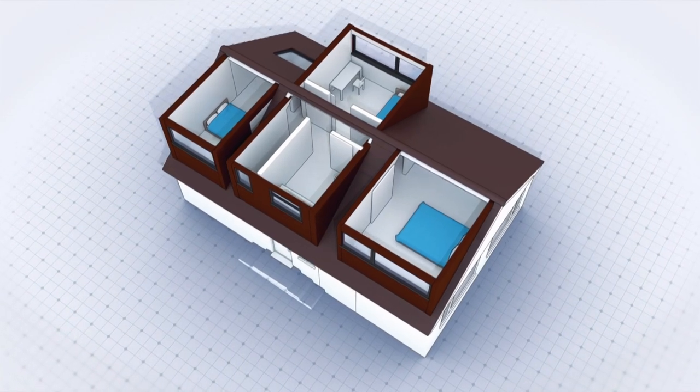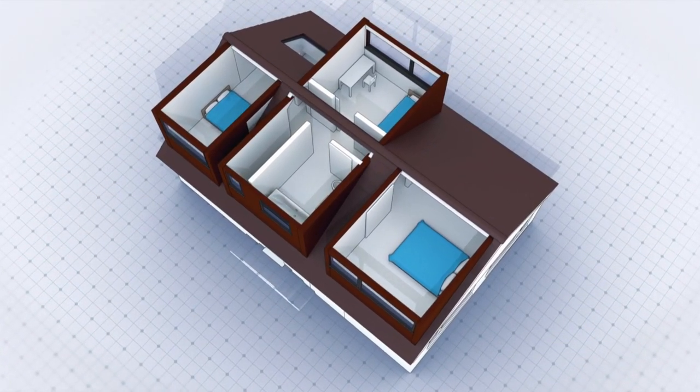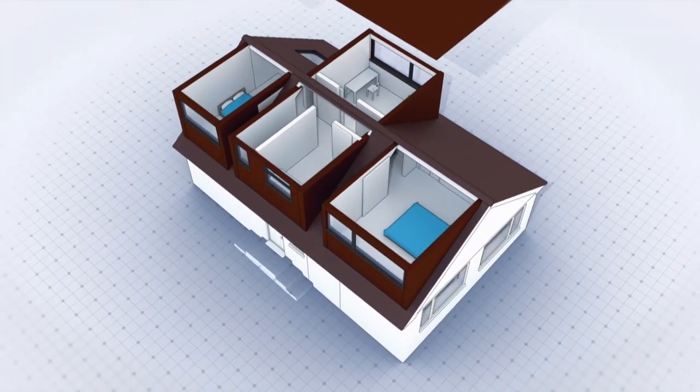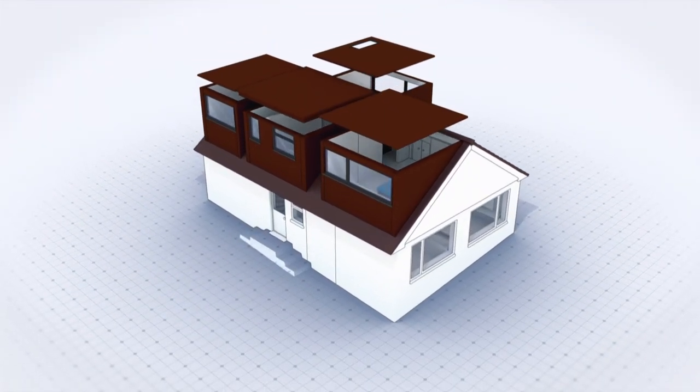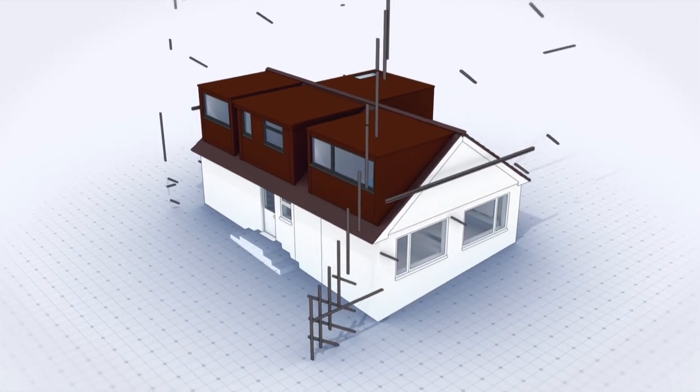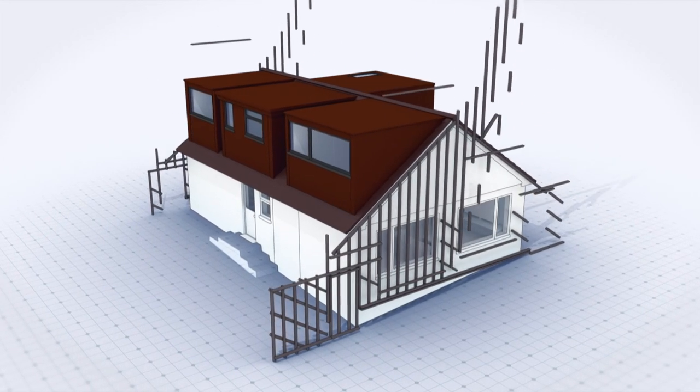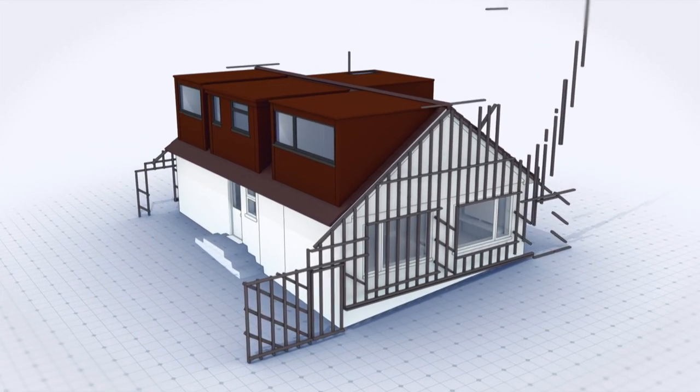Upstairs, adding three new dormers will give the headroom to create the extra bedrooms that the family need. And clad in weathering steel, they'll give the house the distinctive look that Darren's after. To create more impact and screen the bungalow from passers-by, Carl is planning to put up a trellis at the front and back that follows the outline of the building.